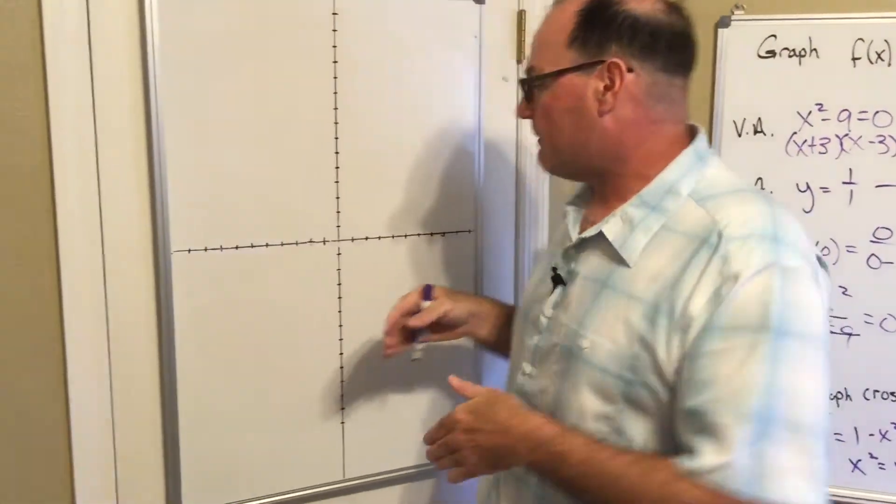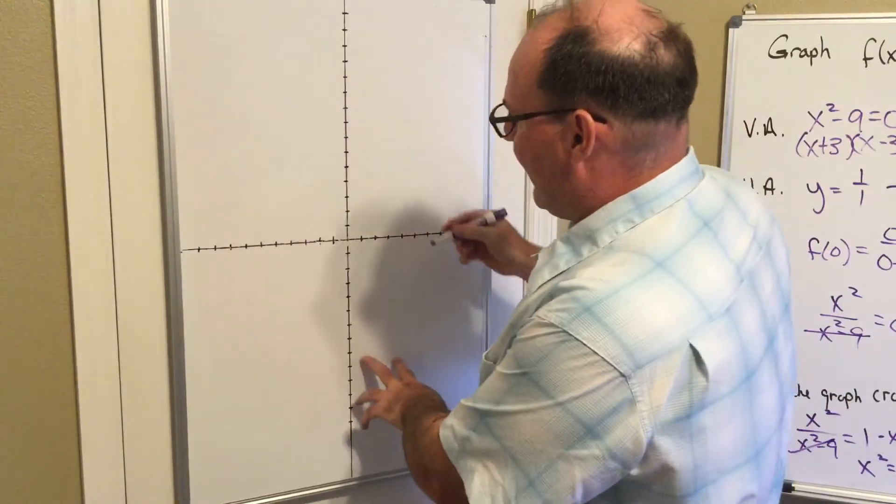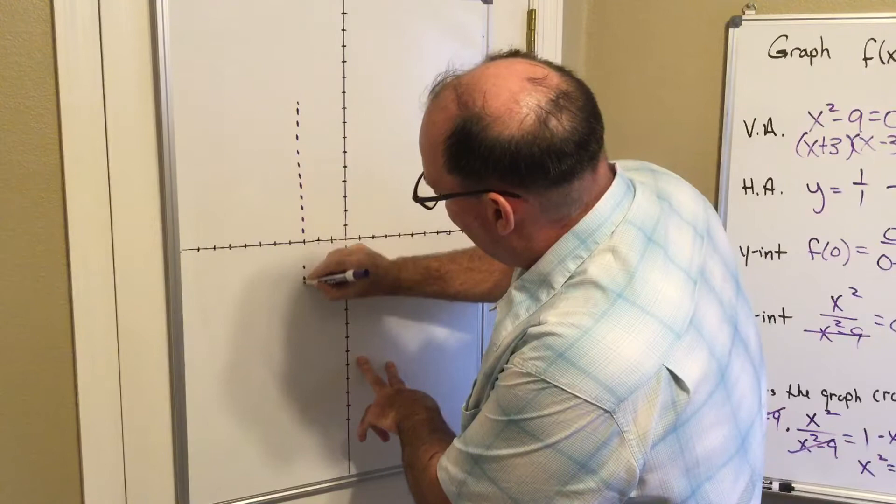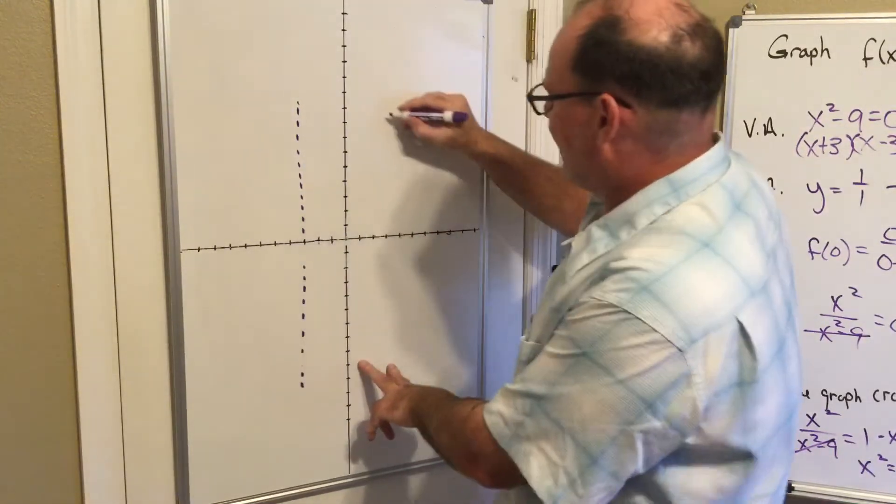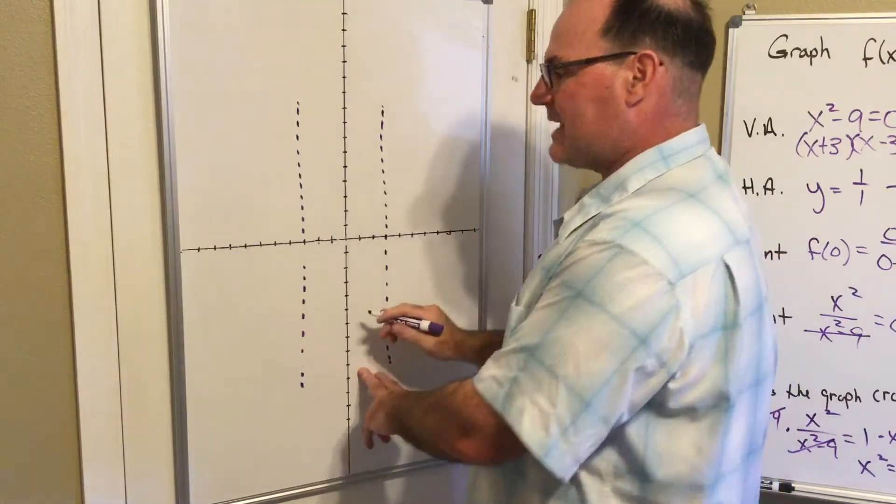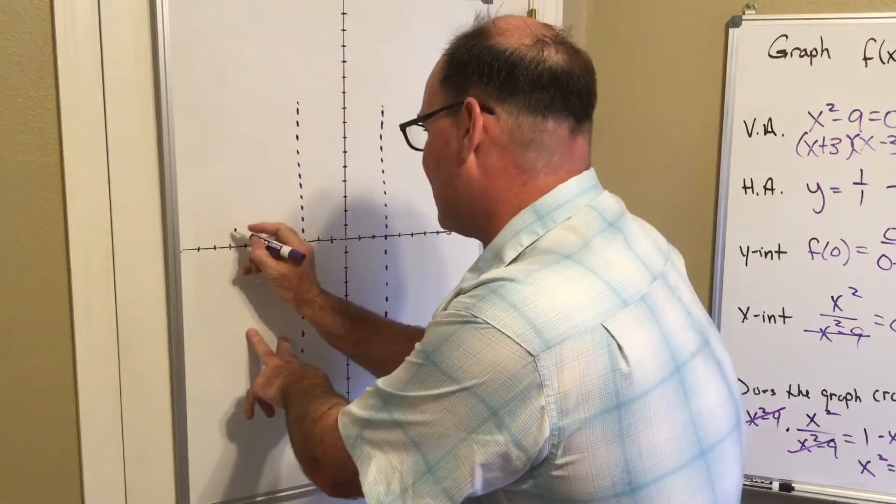My vertical asymptotes are both at negative three and positive three. My horizontal asymptote is at y equals one, so I get this little thing that looks like an H.